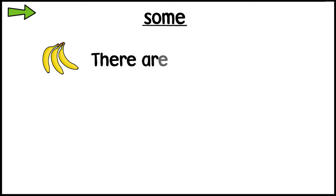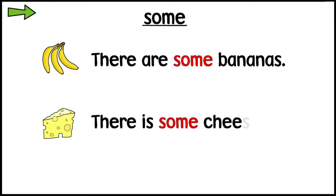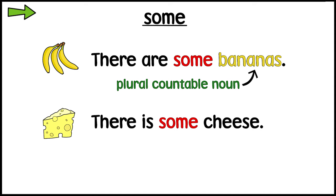There are some bananas. There is some cheese. We use some with plural countable nouns and uncountable nouns in positive sentences.